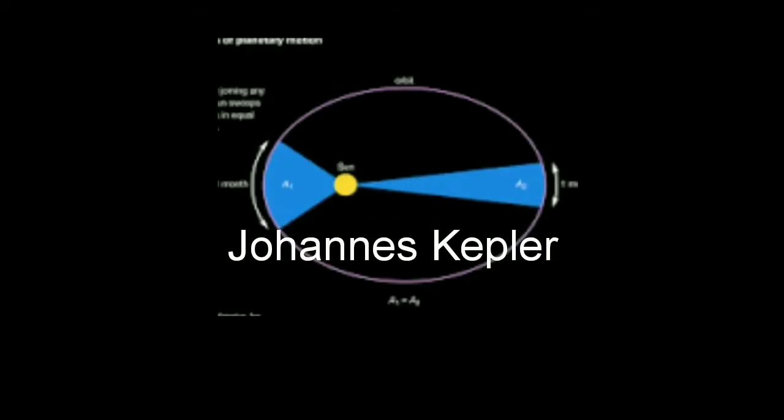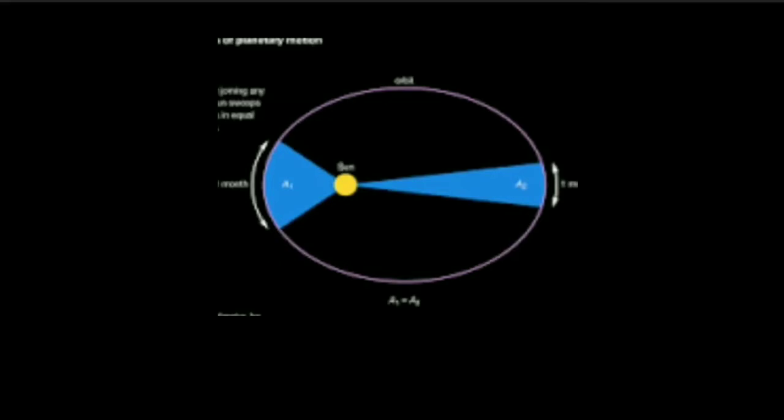Johannes Kepler, one of the finest astronomers of all time, gave two laws, one of which was the planets like our Earth revolve around stars like the Sun in elliptical orbits.